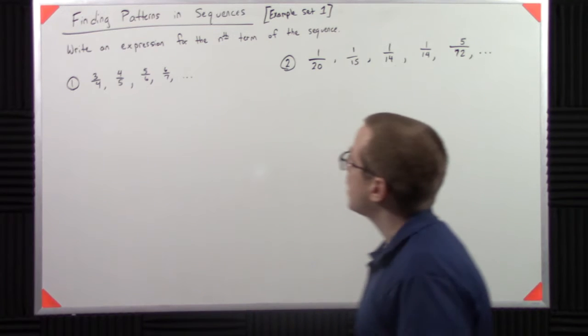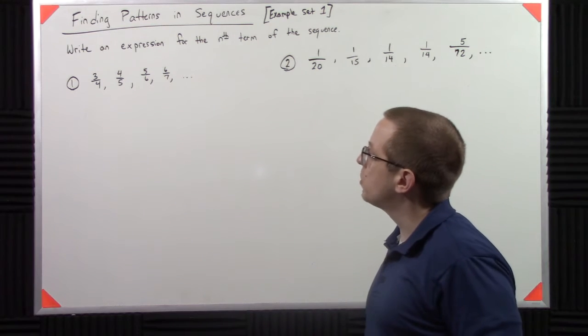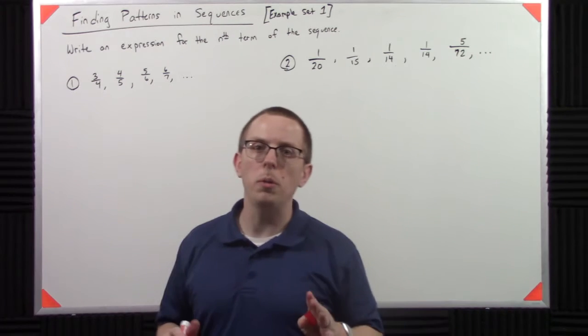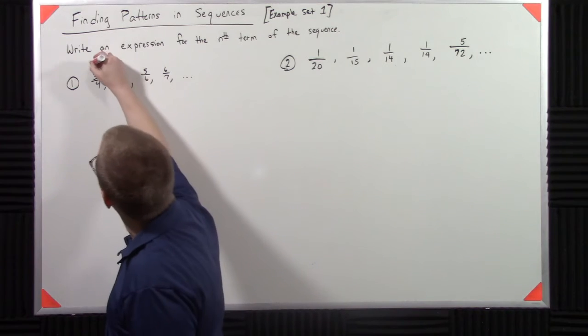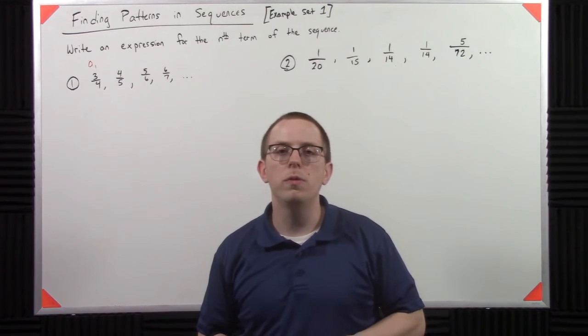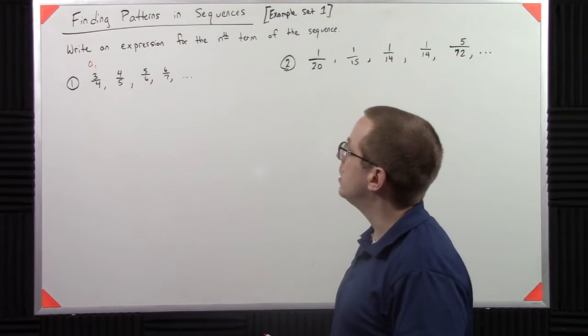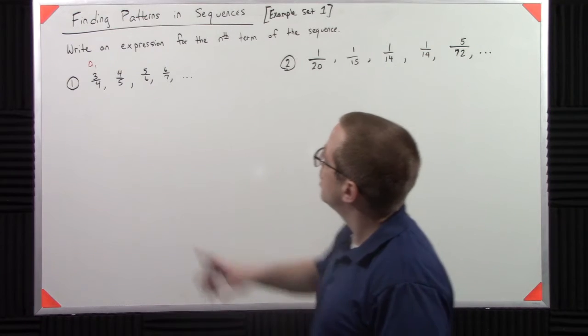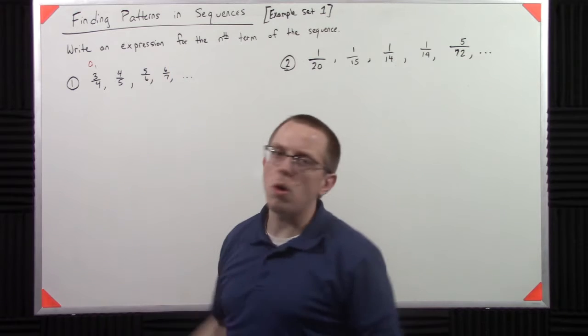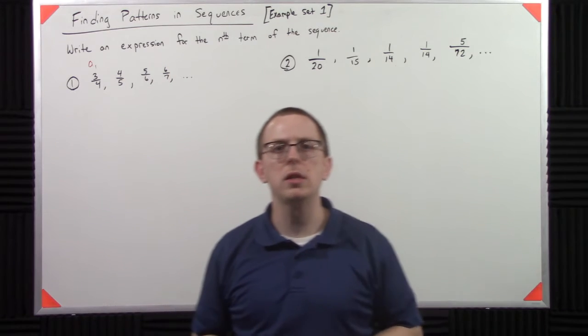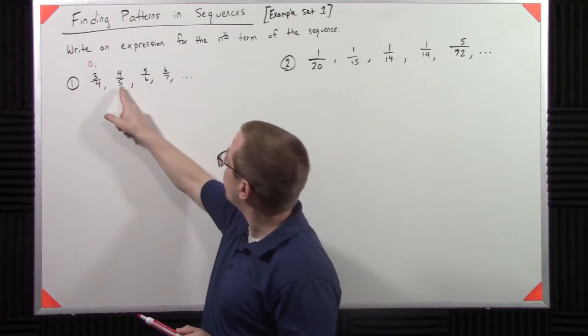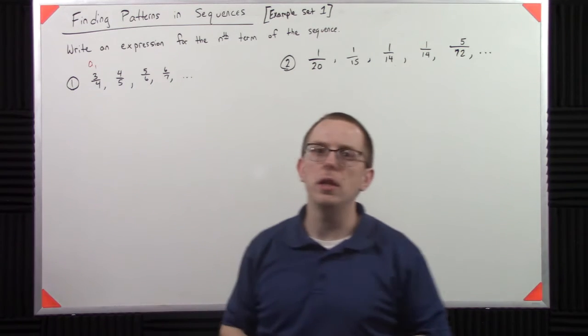In the first case, I have 3/4, 4/5, 5/6, and 6/7. And for our purposes, we're just going to call this the first term, A1, and then so on and so forth. So if I look at this, what I notice is that each time it walks up by one. That's not too bad. And then I notice that each time this one walks up by one. That's also not too bad.